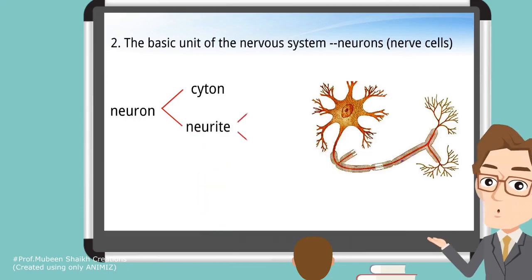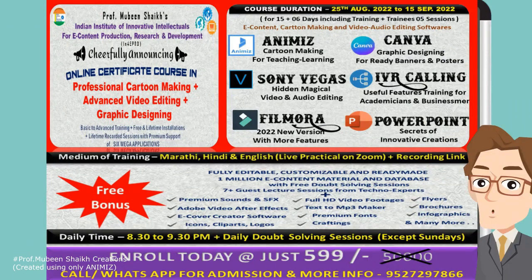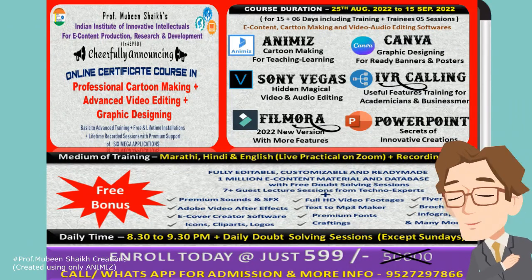the cytone and neurite, which includes the dendrite and axon. If you want to learn from such videos, please enjoy my course. Thank you.